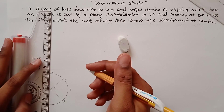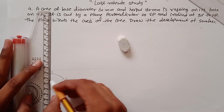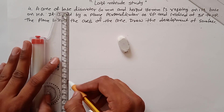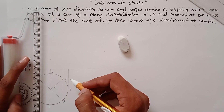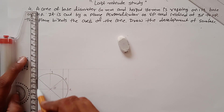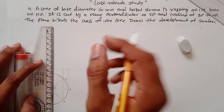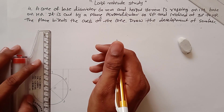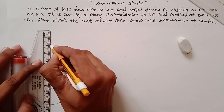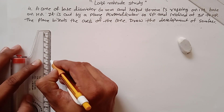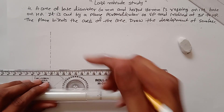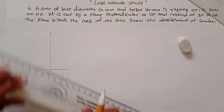Draw vertical projections to find the front view, which will be a triangle. The height is 70mm, so measure a distance of 70mm and draw an axis. Then join it with the base points to construct the front view.